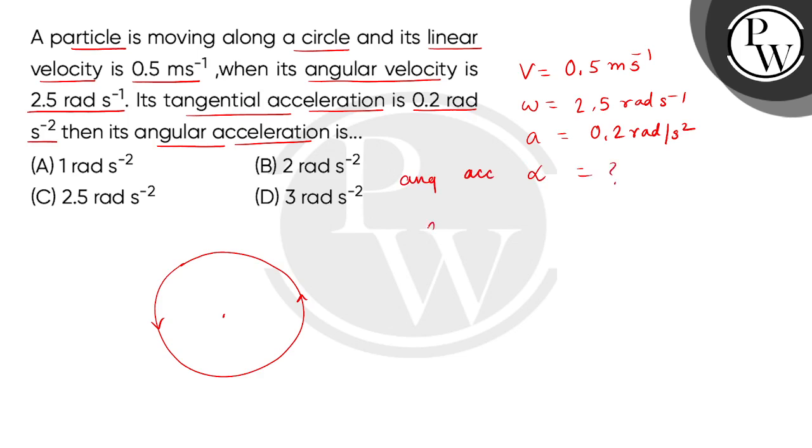The formula: linear acceleration is equal to the radius of the circle multiplied by the angular acceleration. We can also write V equals R omega for the velocities.